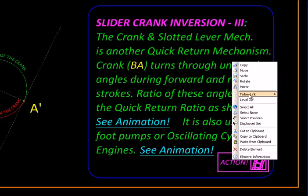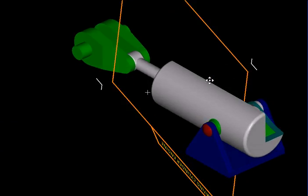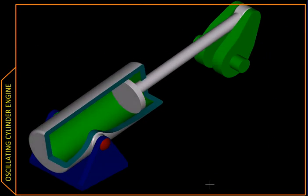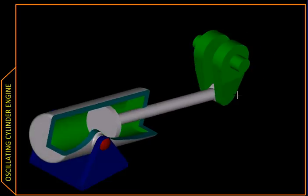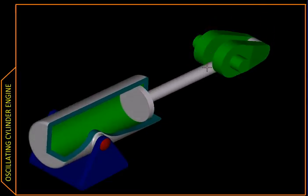So we will follow the other link, and that takes us here. Over here we have what is called an oscillating cylinder engine. Here we have the crank, fully rotating crank, that's our input. Attached to that is the piston.